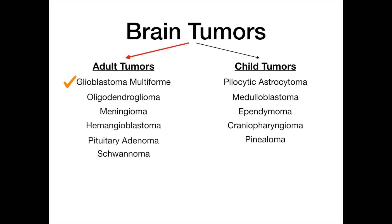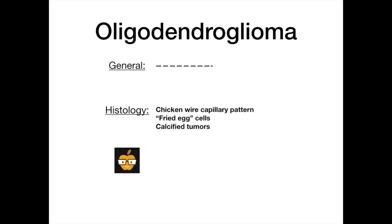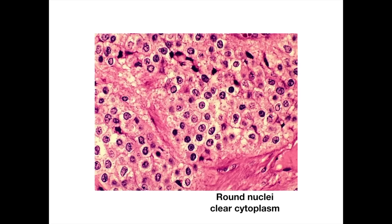Our next tumor is the oligodendroglioma. There's really not much general knowledge needed here — you just need to know its histology. You see things known as chicken wire capillary patterns, fried egg cells, and these tumors tend to be calcified grossly. The fried egg cells have classic round nuclei with clear cytoplasm — like a fried egg where the yolk is defined but surrounded by clear egg whites.